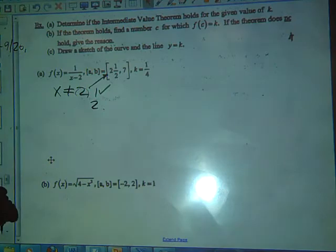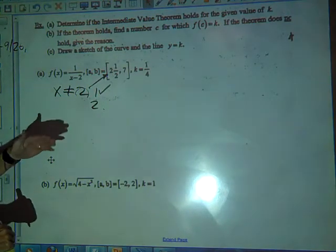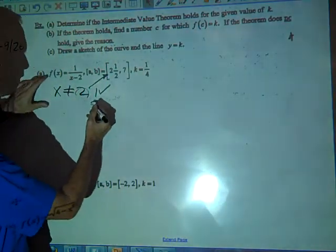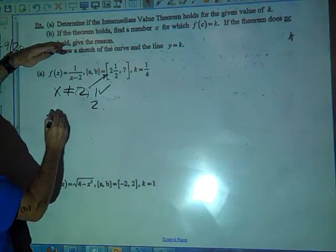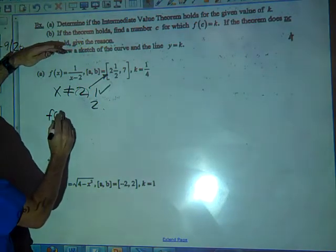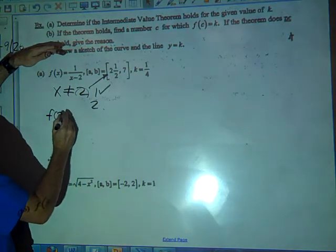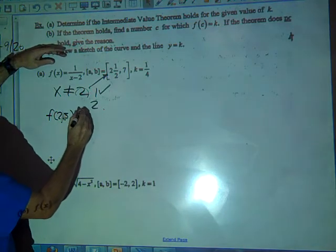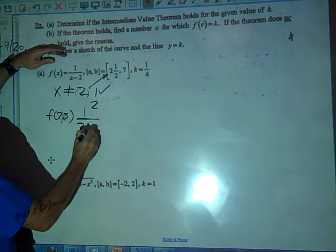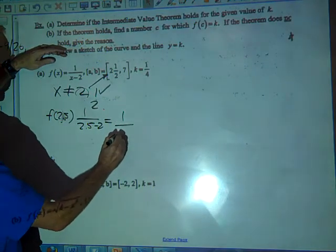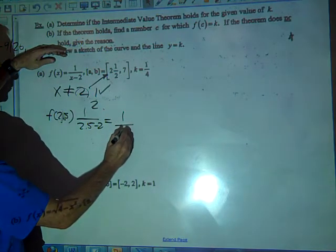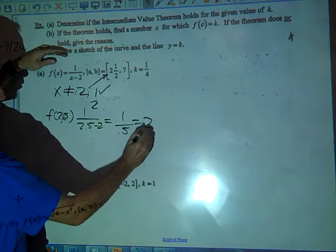And condition two is f of a cannot equal f of b. So let's go ahead and find f of a and f of b. So f of a is going to be f of 2.5, right? And what is that going to be? 1 over 2.5 minus 2, it's going to be 1 over 0.5 which is 2, which equals 2.